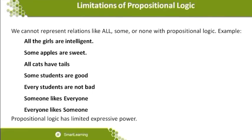Why? When I write 'everyone likes someone,' I cannot use proposition logic because I need a conclusion that is definitively true or false. My question is: who is that someone? I don't know — someone may be anyone. And who is everyone? How many people does everyone represent? I don't know. When I cannot come to a specific conclusion, I call it a limitation of propositional logic.